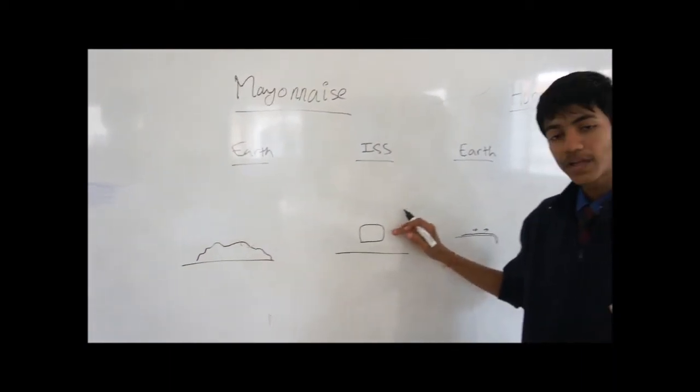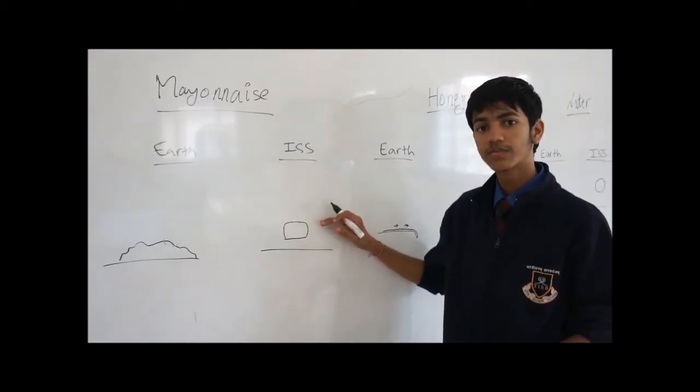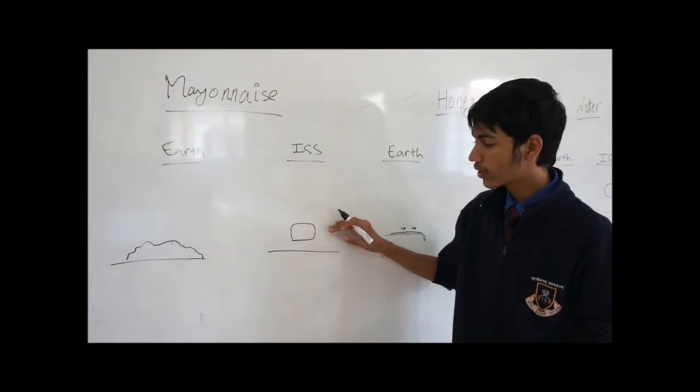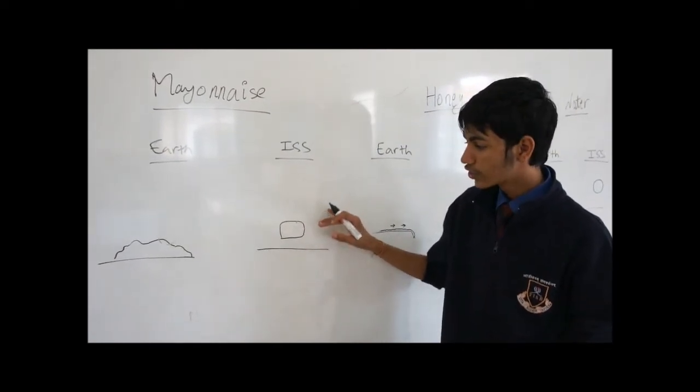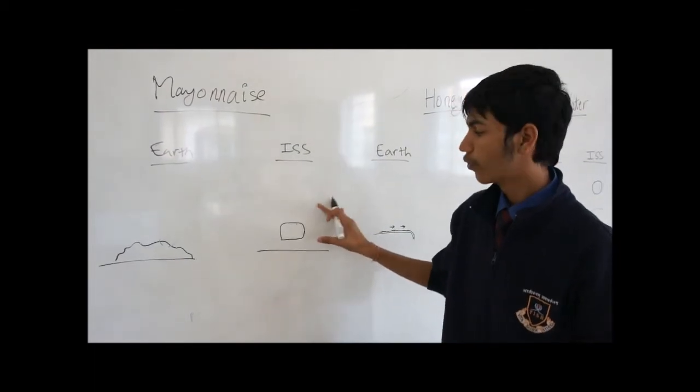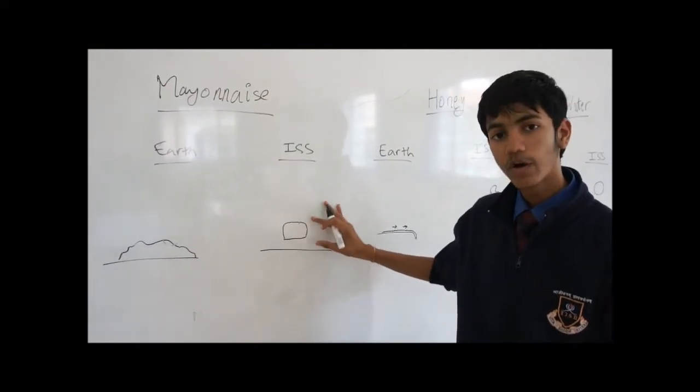On the ISS, however, we expect that due to the lower pressure and the absence of gravity, the low stress will cause it to mimic the properties of a solid to an even greater extent. Thus, it will not form a sphere and will not flow, and on the other hand, it may form a roughly cuboidal shape.